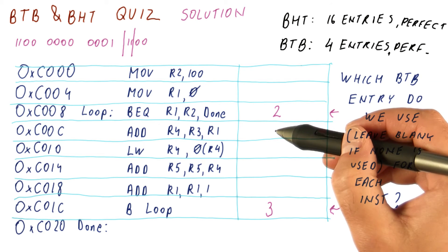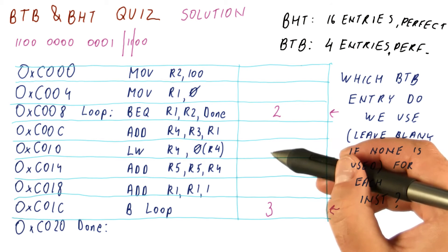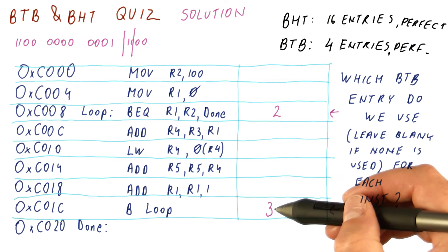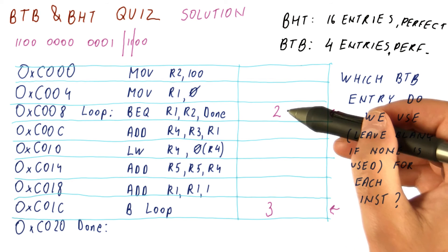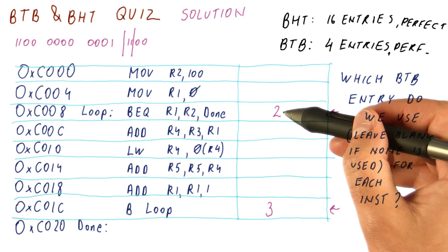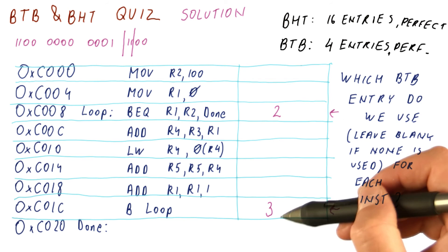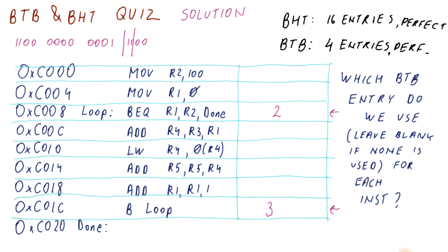The next instructions would have used entries one, two, and three. Then because we have four entries, the pattern wraps around using entries zero, one, two, three again. But since only these two instructions actually use BTB entries, all we have to do is access entry number two once, and access entry number three 100 times.